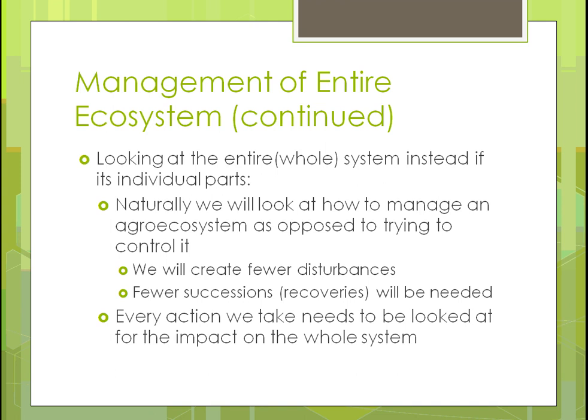Fewer successions or recoveries is also a goal. It's like slipping and breaking your arm — if you do that enough times, it takes longer every time to heal. We're trying to create fewer disturbances so we don't have to worry about those recoveries. There's a point at which if you disturb the ecosystem too many times, it might not be able to recover. Everything we do needs to be evaluated for its impact on the whole system, because some things we thought had no effect have tremendously affected what's happening.